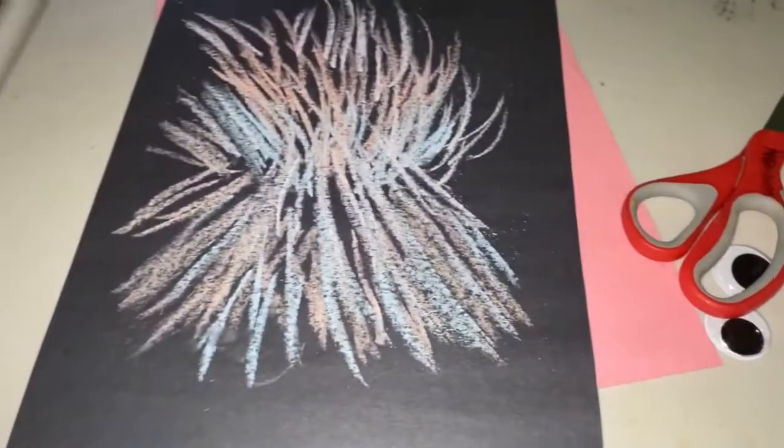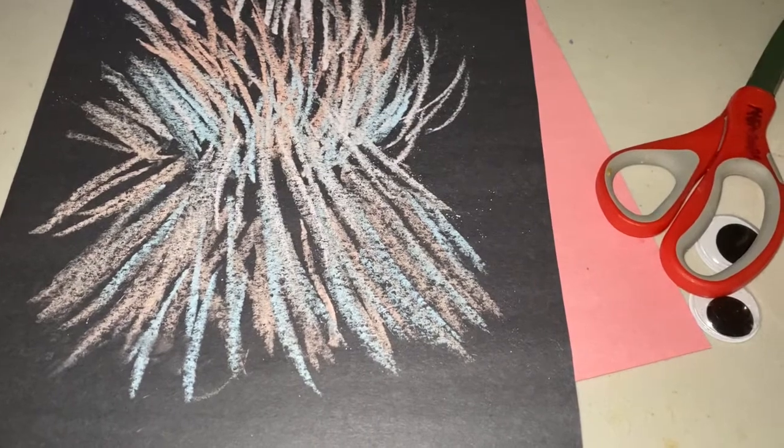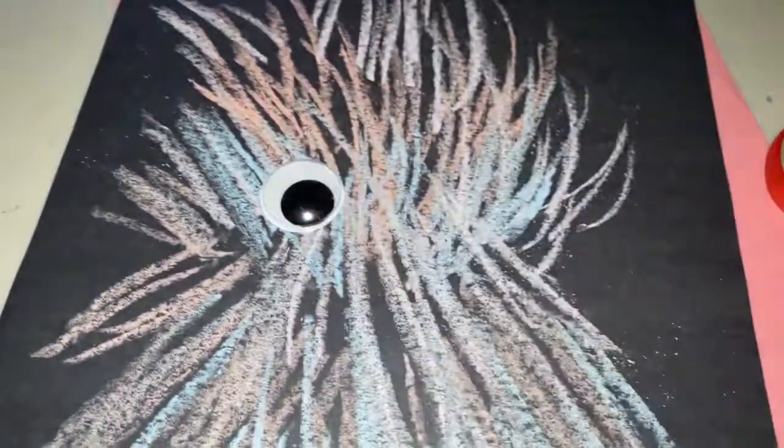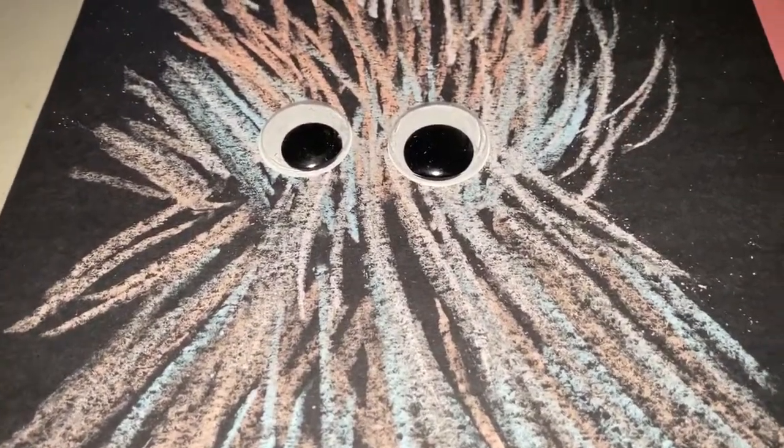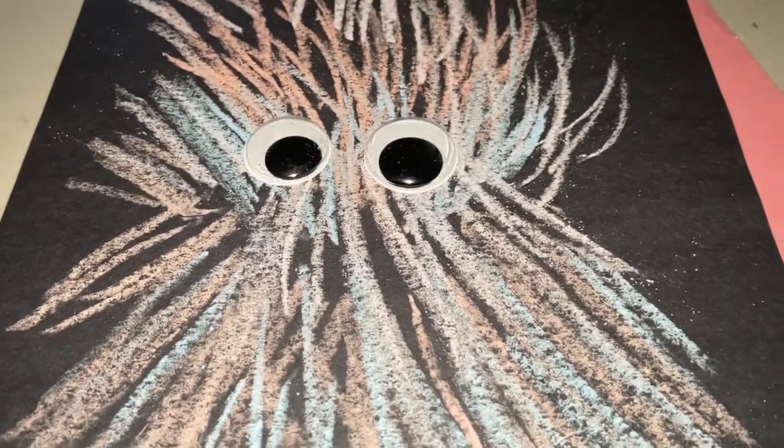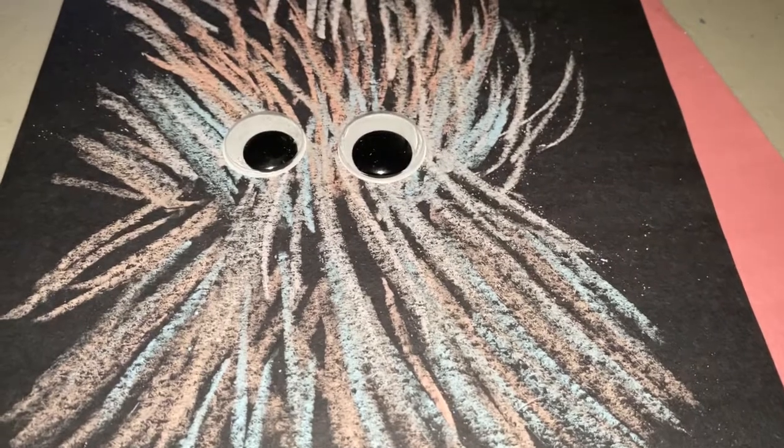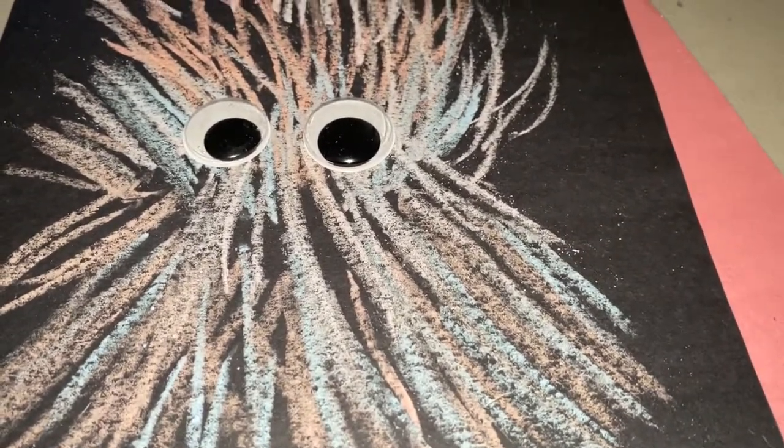Now I'm gonna do the next step. I'm gonna get the glue and glue the googly eyes. I'm gonna glue one eye there, and I'm gonna do the same process with the second eye. Again, if you guys don't have the wiggly eyes or googly eyes, get white paper and draw your black eyes onto the paper.